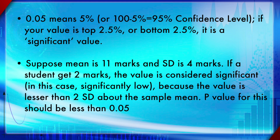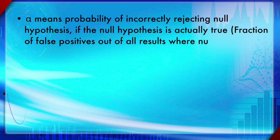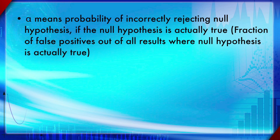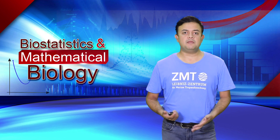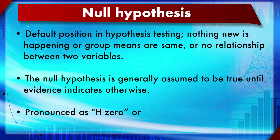Alpha is formally defined as the probability of incorrectly rejecting the null hypothesis when the null hypothesis is actually true — in other words, the fraction of false positives out of all results where the null hypothesis is actually true. That is the formal definition of alpha.